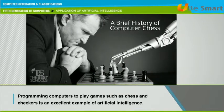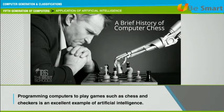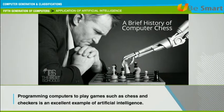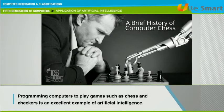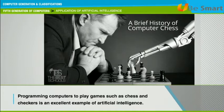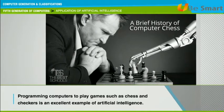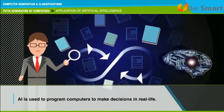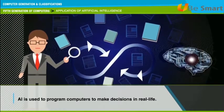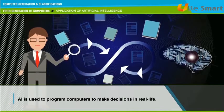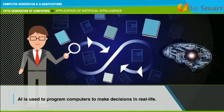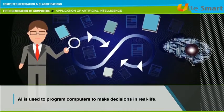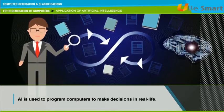Let us look at some of the applications of artificial intelligence. Programming computers to play games such as chess and checkers is an excellent example. Artificial intelligence is also used to program computers to make decisions in real life. For example, some expert systems help doctors diagnose diseases based on symptoms.